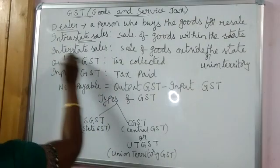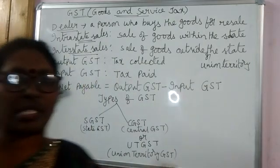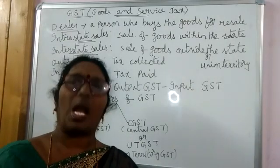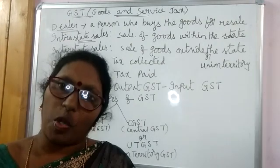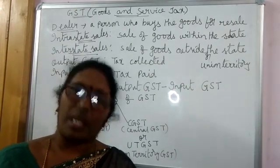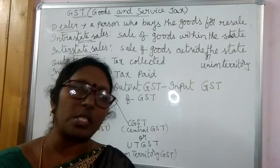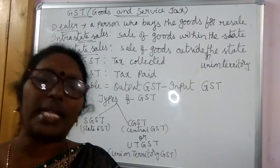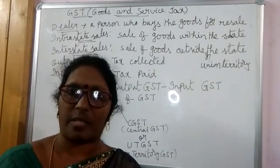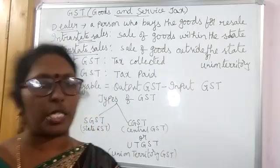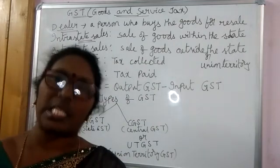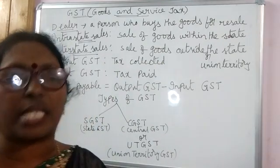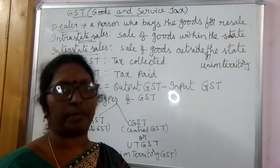The other one is interstate sales. Interstate sales means sale of goods outside the state. Suppose the dealer of West Bengal buys the goods in West Bengal and sells the goods in another state or union territory — that is known as interstate sales. So if the sales are within the state, they are intrastate; if from state to another state or to a union territory, they are interstate sales.